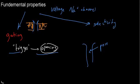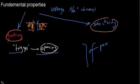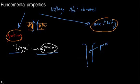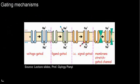So the two fundamental properties are selectivity and gating — and they're really important. Selectivity is about filtering: only specific ions get through. Gating is about what trigger you need — what button do you need to press to open the channel. Let's now discuss the different buttons we can press.